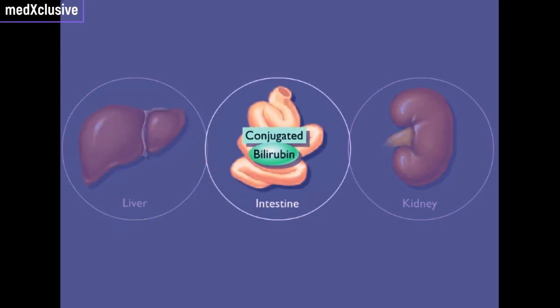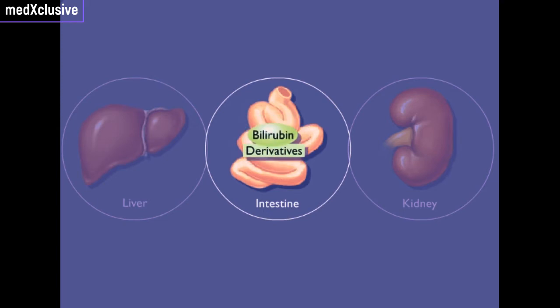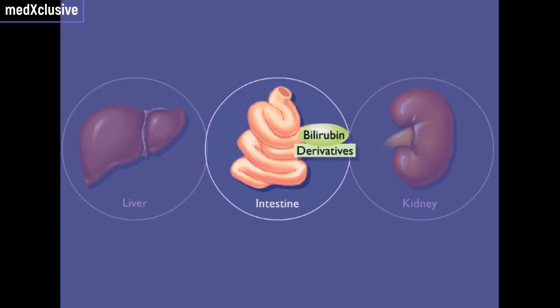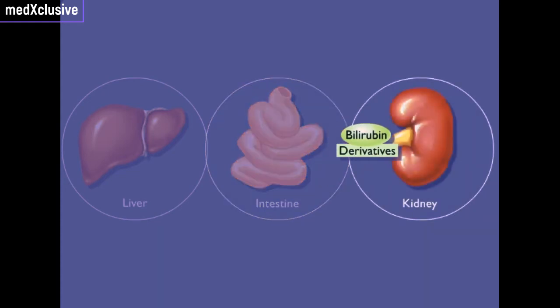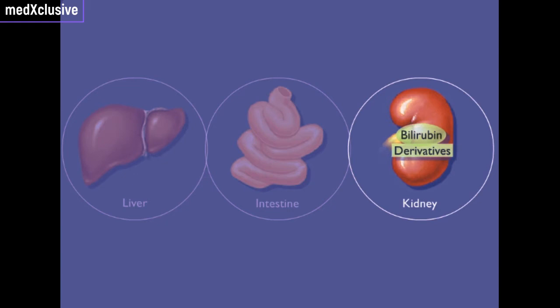Intestinal bacteria convert bilirubin into bilirubin derivatives, which contribute to the color of feces. Some of the bilirubin derivatives are absorbed into the blood and excreted from the kidneys in the urine.